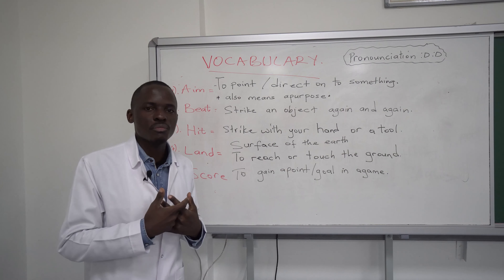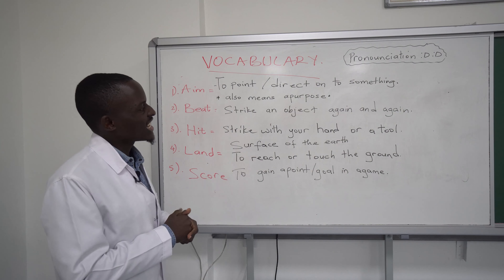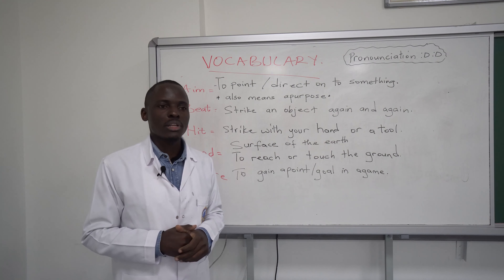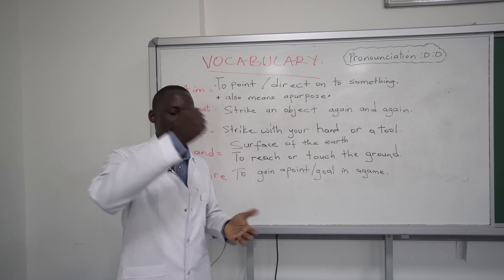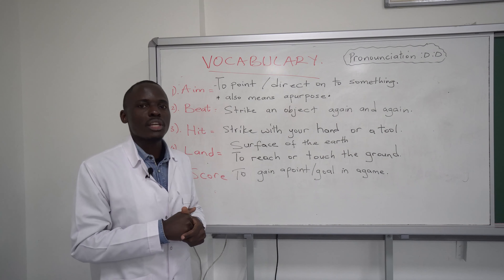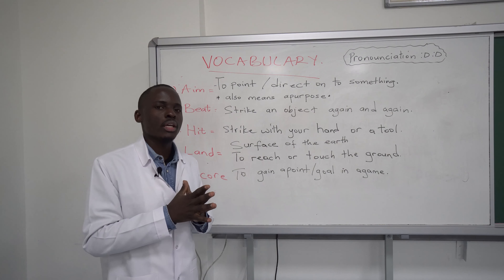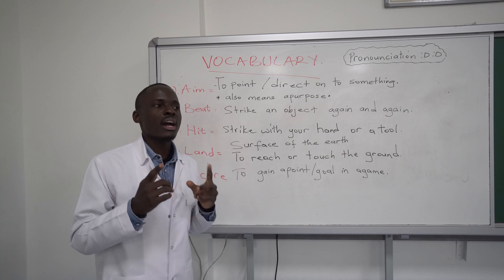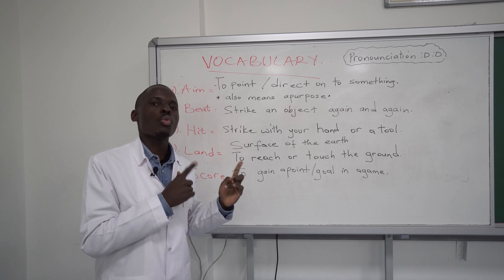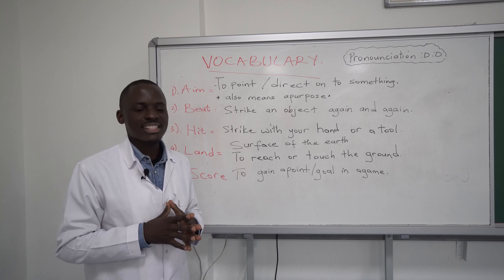Your aim is what you want to be in life, what you want to achieve. To beat is to strike an object again and again. Beat also has another meaning: to win over something. For example, 'I beat him' means I won.